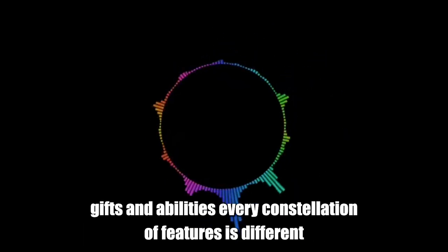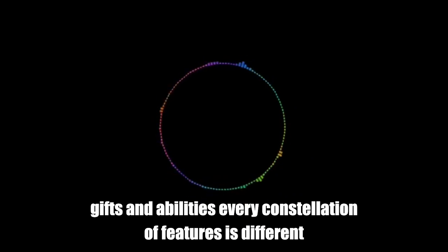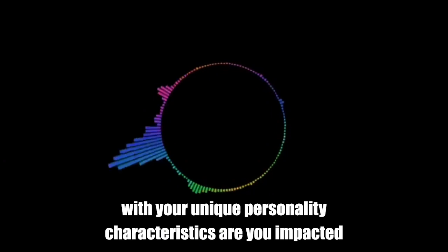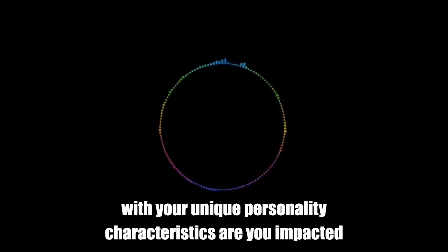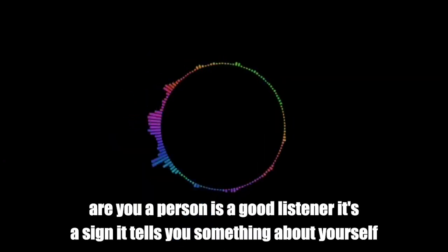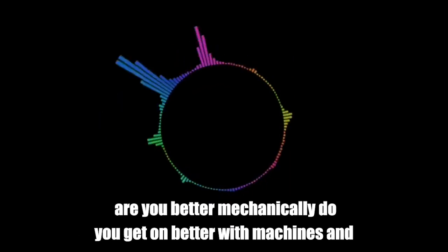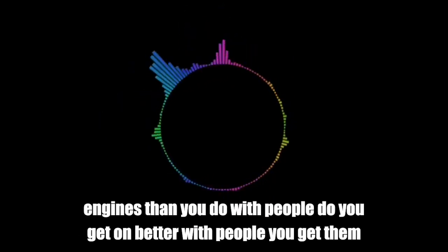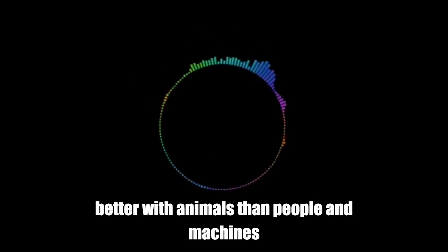Don't two people have the same circle of gifts and abilities? Every constellation of features is different. Not just your academic ability. It's a small part of the things that have to do. Your unique personality characteristics. Are you empathetic? Are you a person who's a good listener? It's a sign. It tells you something about yourself. Are you better mechanically? Do you get on better with machines and engines than you do with people? Do you get on better with people? Do you get on better with animals than people and machines?